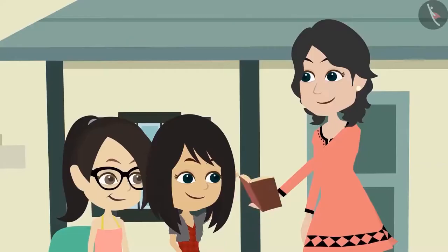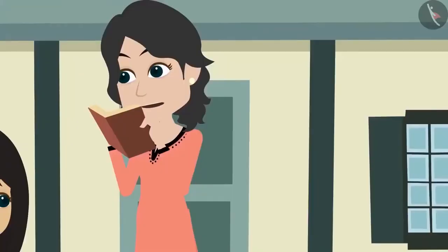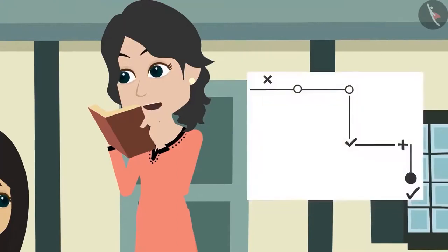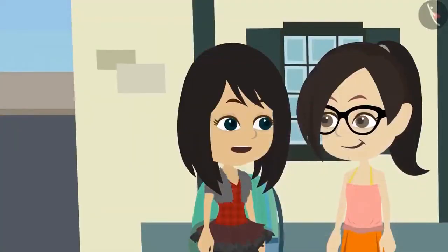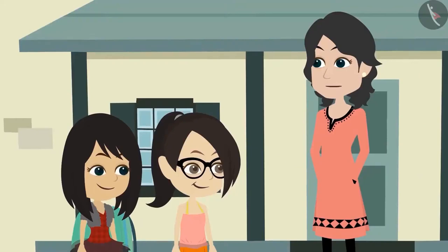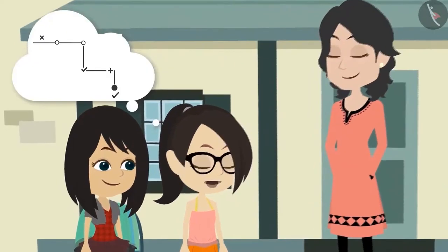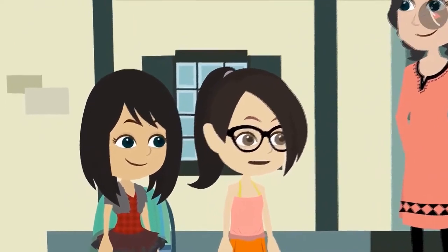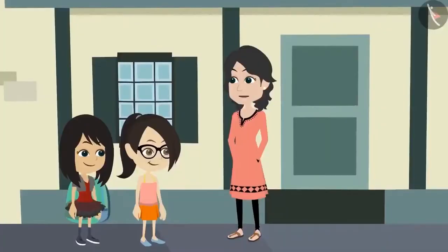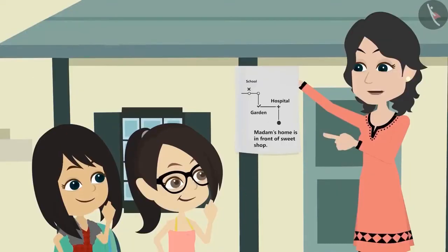Neha, show me what you have made. Oh, great Neha. You have made a map that leads to my home. Madam, what is a map? Don't worry Neha, I will explain. If a place is represented with the help of lines, then it is called a map. A map helps us to go from one place to another very easily. Just like the way Neha's map helped us reach your home, Madam. Yes, exactly. But a map also helps to know what is situated where. Like by looking at the map you can easily tell the location of the park.